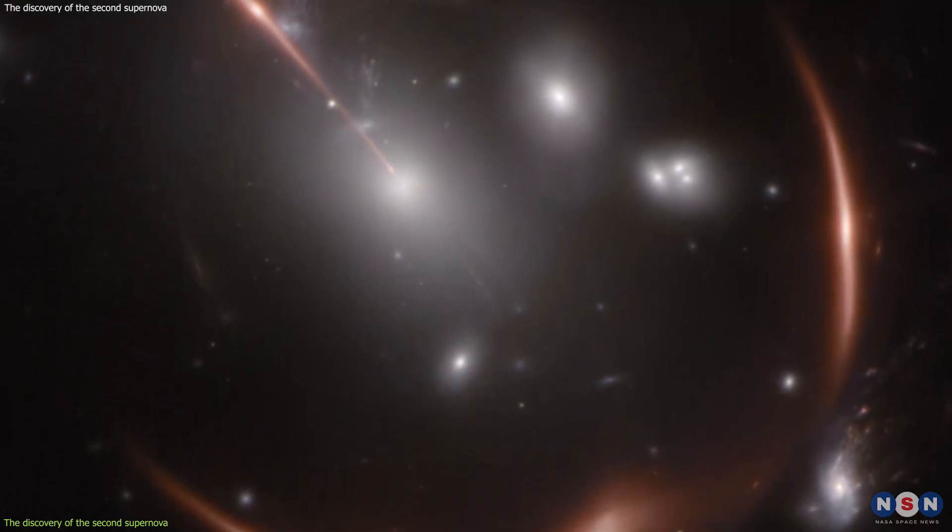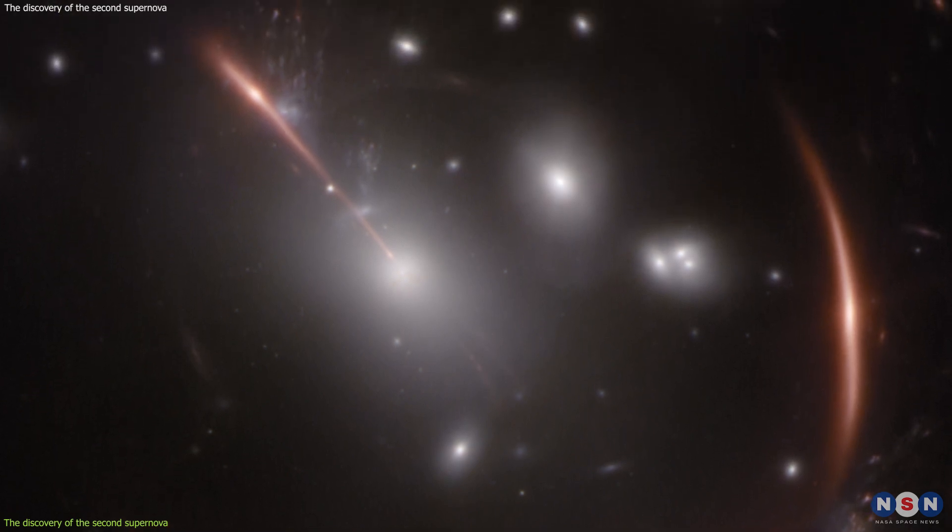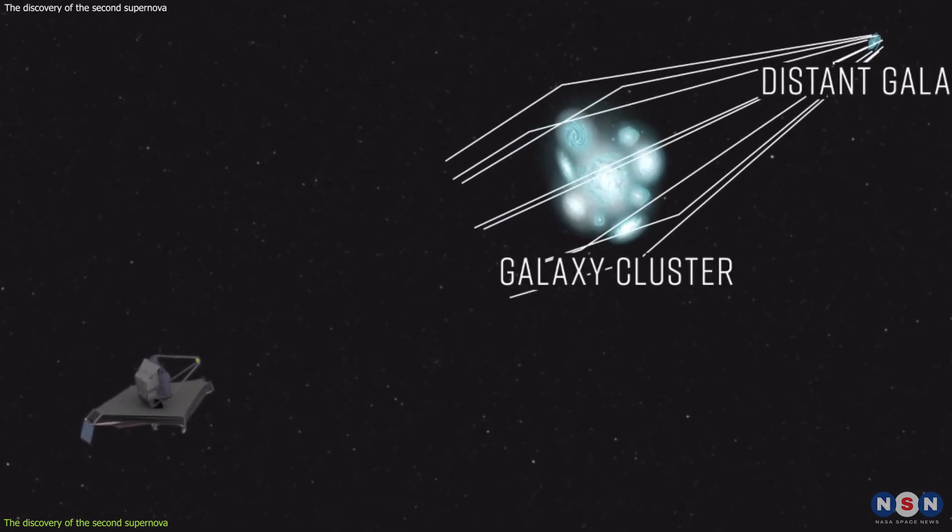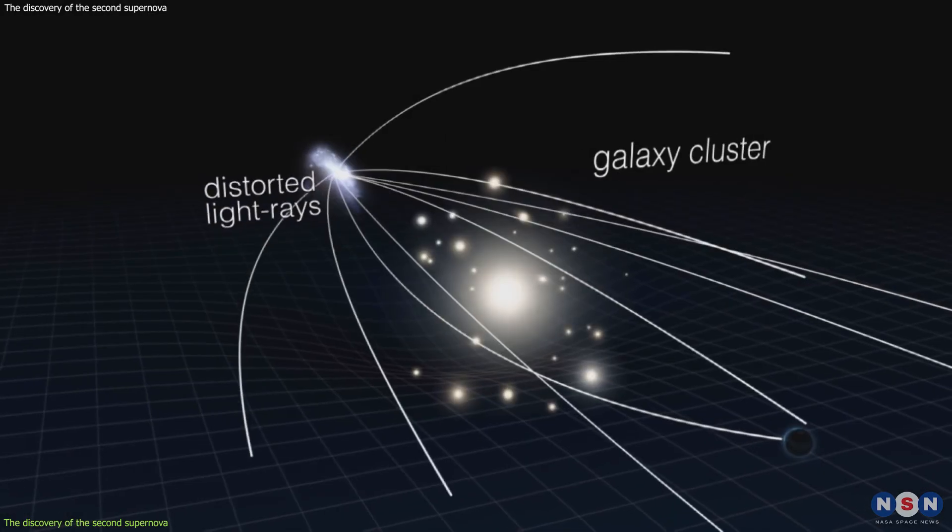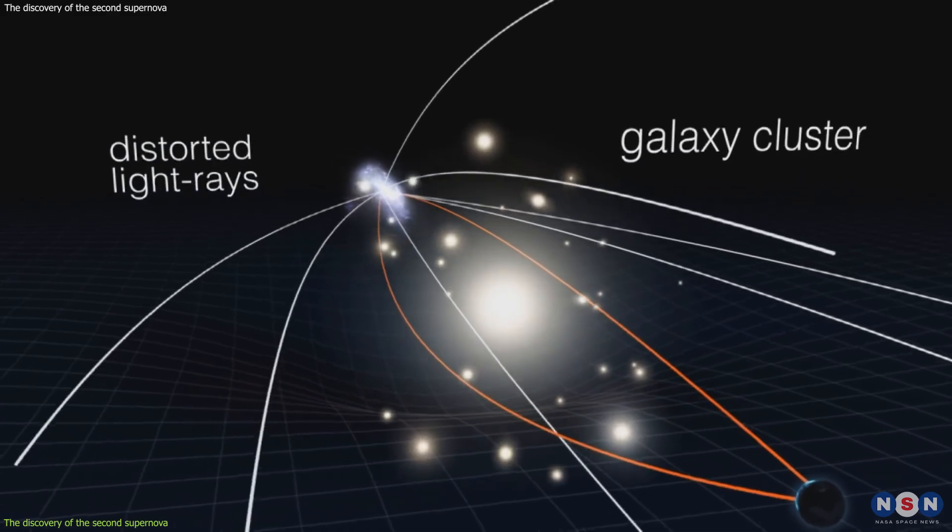These images are not identical, because they have different orientations, magnifications, and time delays. This means that the light from each image took a different path and time to reach us, depending on how much it was bent by the cluster's gravity.